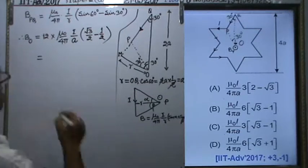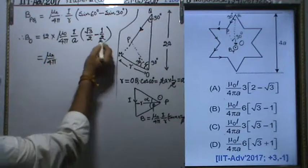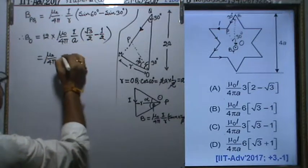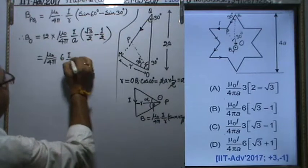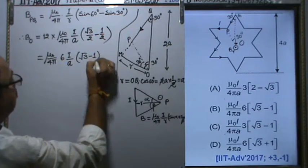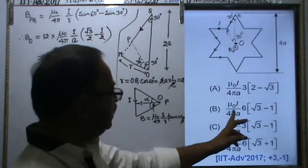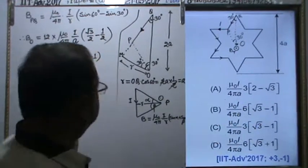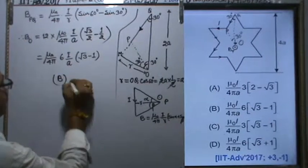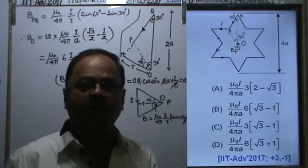So the answer is: μ₀/4πa × 6I(√3 - 1). This is the correct option - option B is the correct one. Thank you.